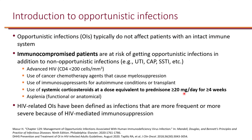That includes both solid organ transplant and stem cell transplant. One important thing to keep in mind is that use of systemic corticosteroids at a dose equivalent to prednisone 20 mg per day or more for at least 4 weeks is considered immunosuppression because that can affect T cells. And asplenia — the spleen filters the blood, specifically removing encapsulated bacteria such as pneumococcal species and Haemophilus influenzae.